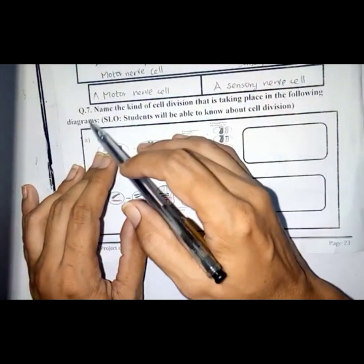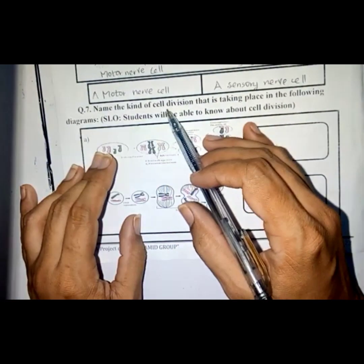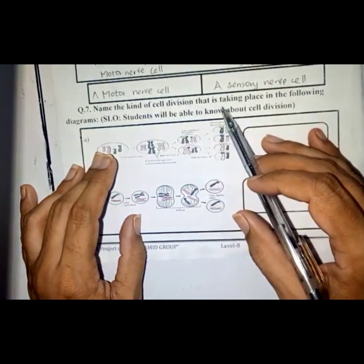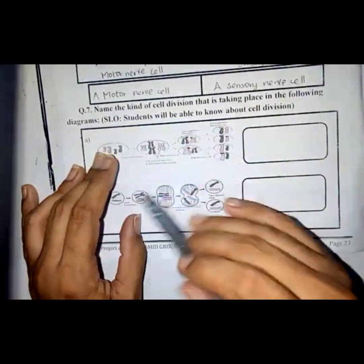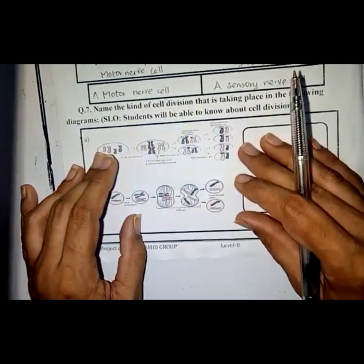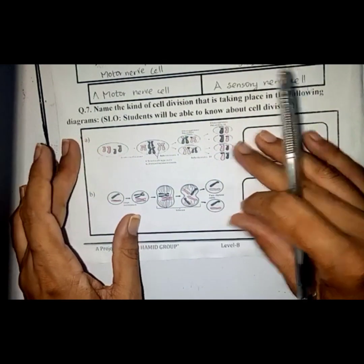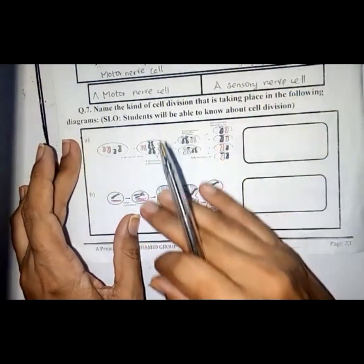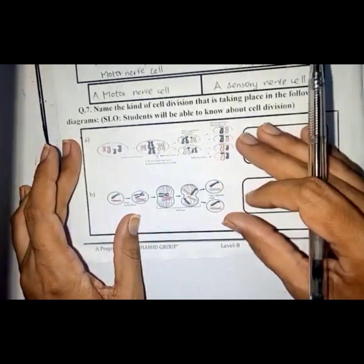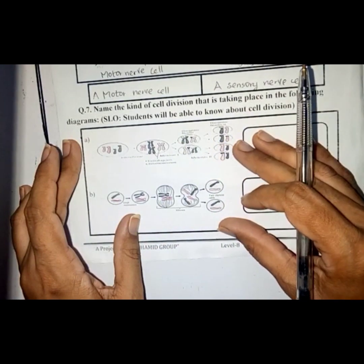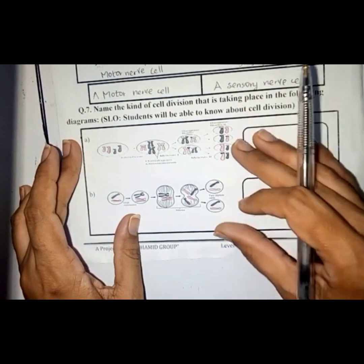Question number 7: name the kind of cell division that is taking place in the following diagrams. So students, here we have in the A and B parts the diagrams of the kinds of cell division.